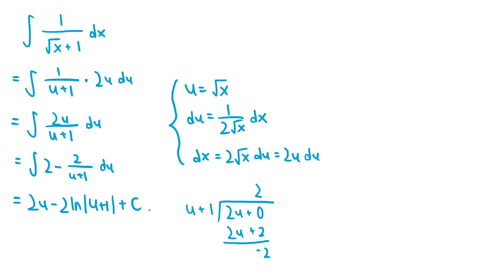If we substitute the square root of x back in for u, we get the final answer, which is 2 square root of x minus 2 times ln of the square root of x plus 1 plus c. We didn't need the absolute value around the logarithm, since the square root of x plus 1 is always positive anyways.